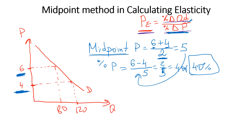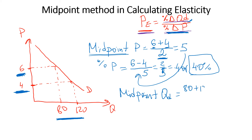We use the same two steps for quantity. First, we find the midpoint for quantity demanded. Looking at the graph, you can probably tell right away that the midpoint between 80 and 120 is 100. But if the numbers are complicated or have decimals, the rule is: add the two numbers together and divide by 2. So we get 200 divided by 2, and therefore the midpoint is equal to 100.